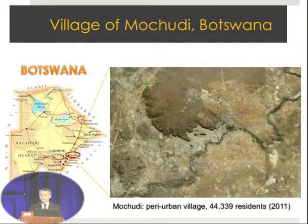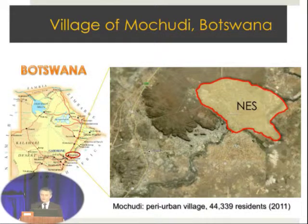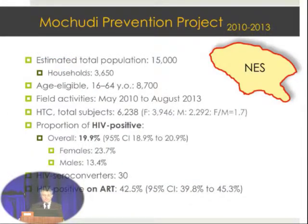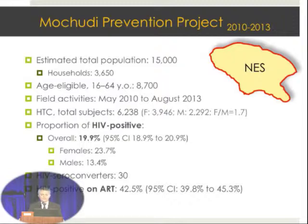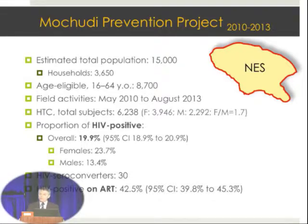Machudi is a very urban village in south and east of Botswana, about 23 miles from the capital, Gaborone. Our activities over three years were in the northeastern sector of Machudi. The estimated total population based on the 2011 census is 15,000 people of all ages. We focused on individuals from 16 to 64 years old, with an estimated 8,700 in this northeastern sector. During three years, from May 2010 to August 2013, more than 6,200 people were tested in households. There were more women than men, with a women-to-men ratio of 1.7.